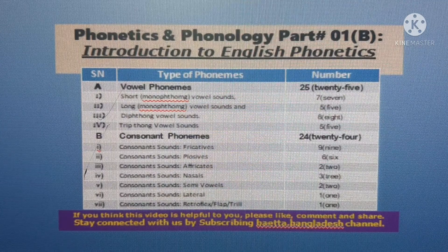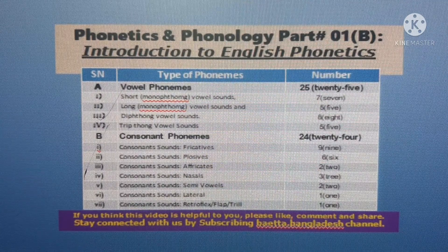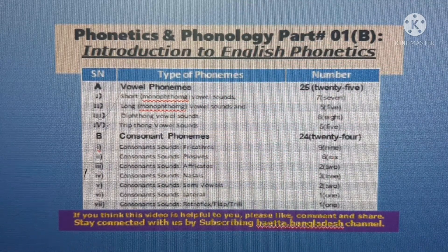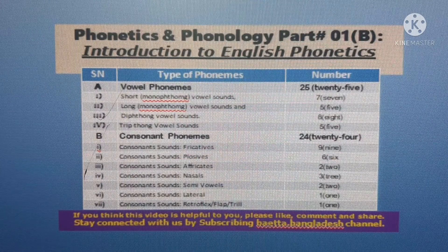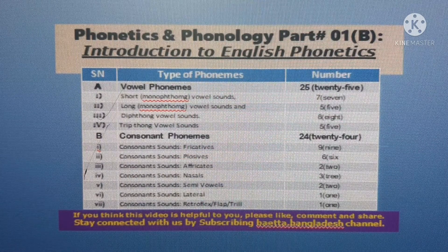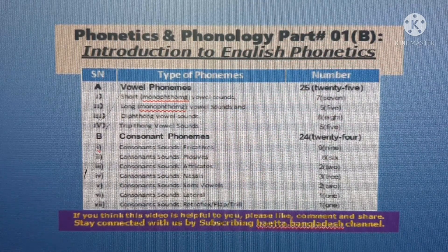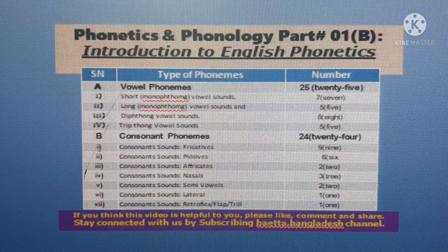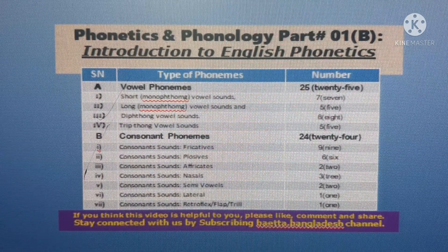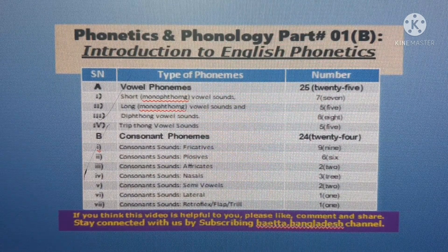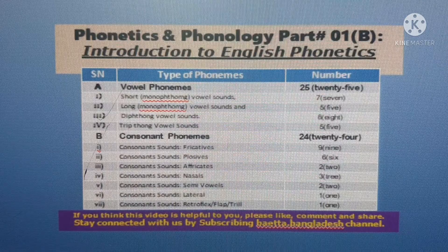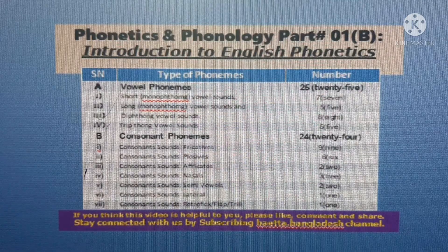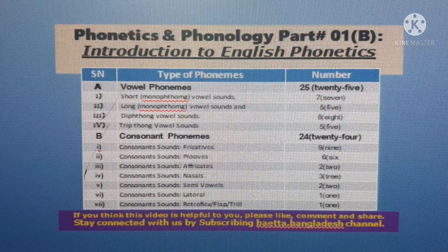In the English phonetic alphabet, there are 7 short monophthong vowel phonemes, 5 long monophthong vowel phonemes, 8 diphthong vowel phonemes, and 5 triphthong vowel phonemes.